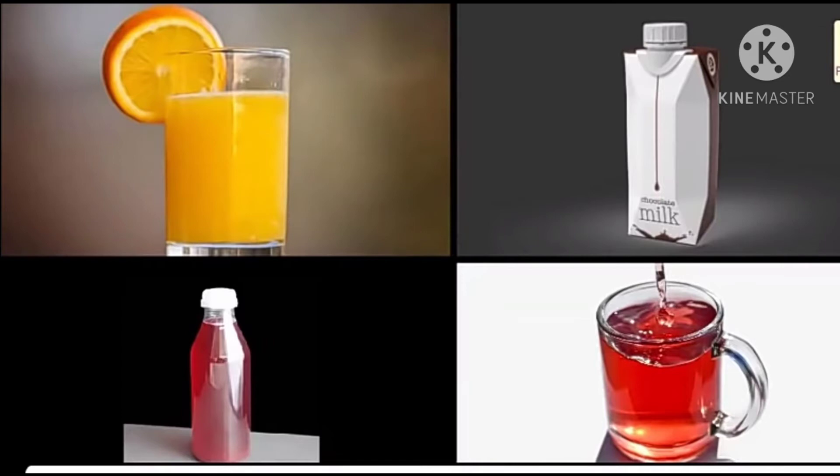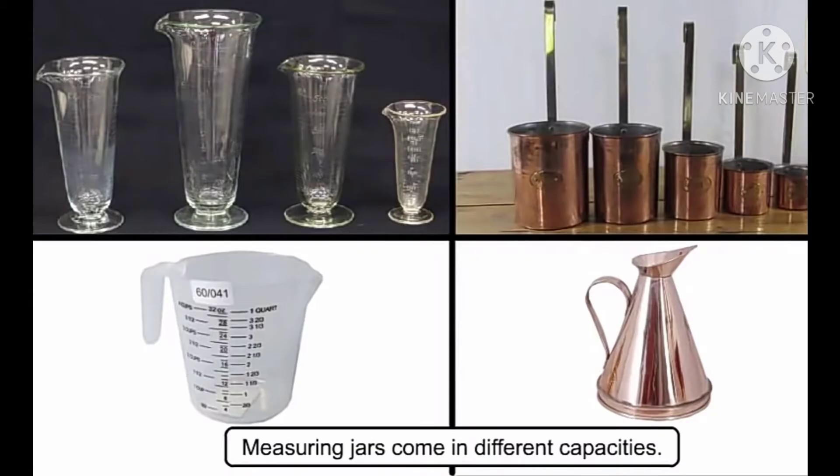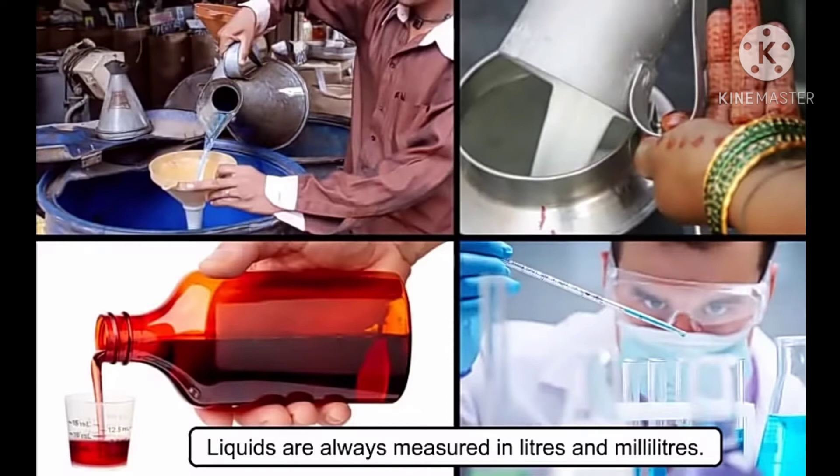We know that liquids take the shape of container. Capacity usually refers to the amount of liquid a container can hold. Measuring jars come in different capacities. Liquids are always measured in liters and milliliters. We can measure the capacity of a tiny bottle of perfume or a big tank of petrol.